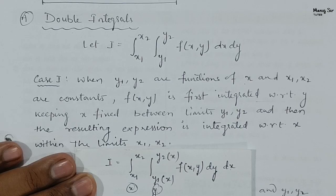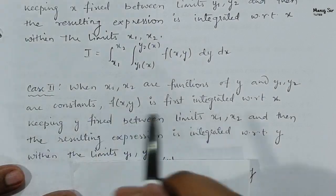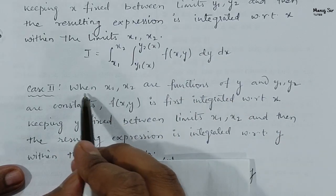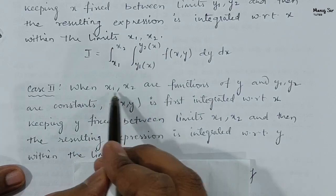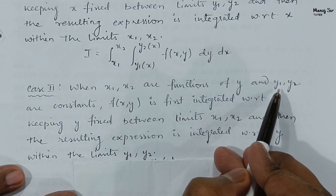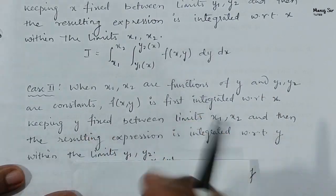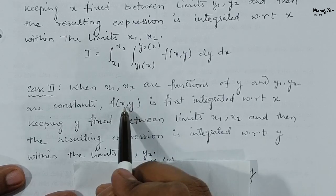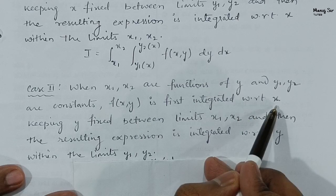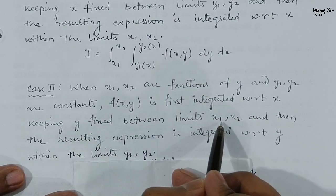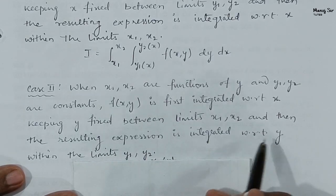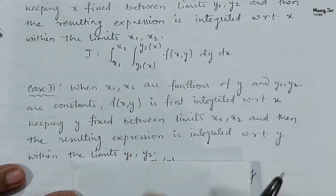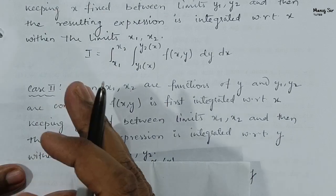Case 2 is almost similar to Case 1, but with x and y swapped. When x1 and x2 are functions of y, and y1, y2 are constants, the function f(x, y) is first integrated with respect to x, keeping y fixed, between the limits x1 and x2. Then the resulting expression is integrated with respect to y, within the limits y1 to y2.